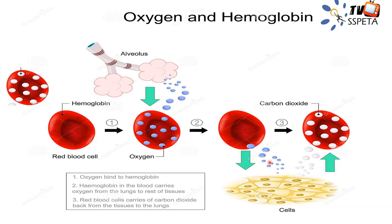The carbon dioxide diffuses out into the red blood cells and combines with hemoglobin, forming carbaminohemoglobin. Here we can see oxyhemoglobin bringing oxygen to the cells for respiration, producing energy with carbon dioxide as the byproduct. The carbon dioxide is picked up by the red blood cells and brought back through veins to the heart, then through the pulmonary artery to the lungs where carbon dioxide is removed.